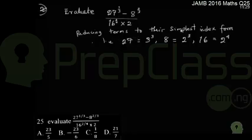27 can be reduced to its simplest index form as 3 all raised to the power of 3. 8 can be reduced to its simplest index form as 2 raised to the power of 3. 16 can be reduced to 2 raised to the power of 4.